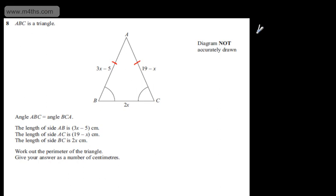That therefore means that AB must be equal to AC. If it's an isosceles triangle, this is what we will have. Therefore we can write, using the symbol for therefore, 3x minus 5 must be equal to 19 minus x. I'm going to solve this equation.